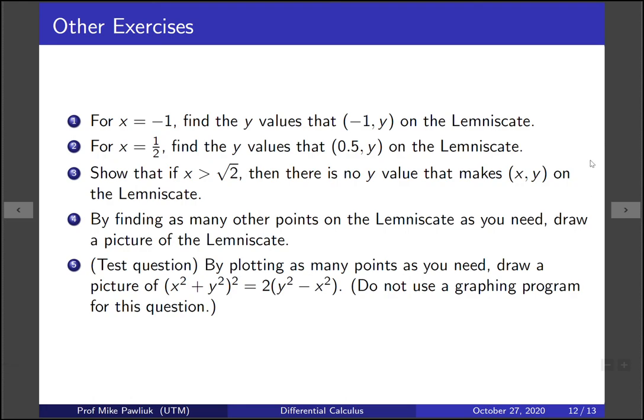Well let me leave you with some exercises that will help you with that. For x = -1, find the y values such that (-1,y) is on the lemniscate. For x = 1/2, find the y values that will make (0.5, y) on the lemniscate. Show that if x > √2, then there's no y value that makes (x, y) on the lemniscate. And then finally, by finding as many other points on the lemniscate as you need, draw a picture of it.